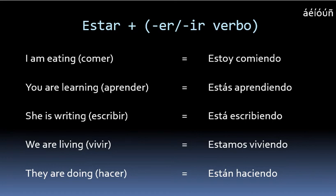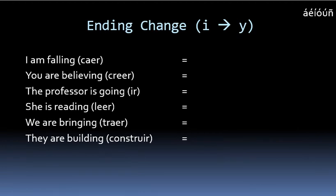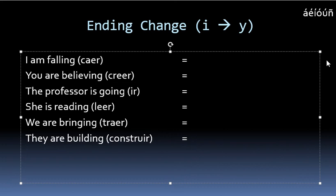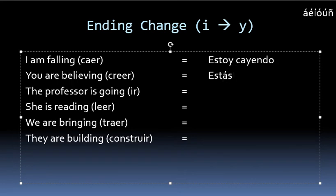Now, as is the case with many verbs in Spanish across different conjugation tenses, there are irregularities. When it comes to certain ER and IR verbs, the -iendo ending gets slightly changed — instead of I-E-N-D-O, you write Y-E-N-D-O. This maintains the flow of the verb when pronouncing it. For example, 'I am falling' could be translated as estoy cayendo, where you put a Y in place of the I. For 'you are believing,' that could be estás creyendo.